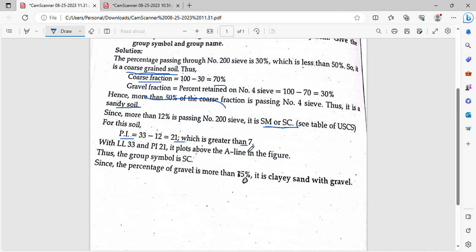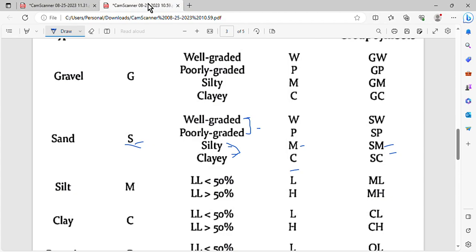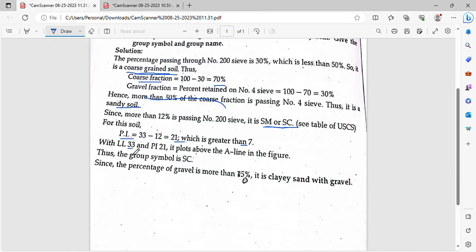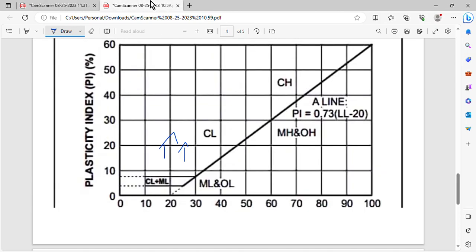This means we have to plot this on the plasticity chart. The plasticity index is greater than 7. Liquid limit is 33. We have to plot this as liquid limit 33, plasticity index 7 on the A-line figure.